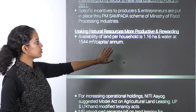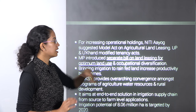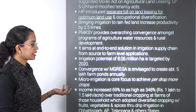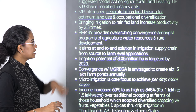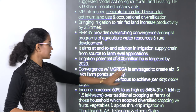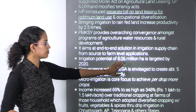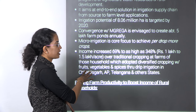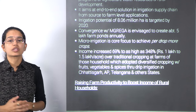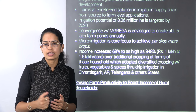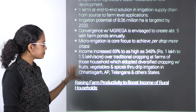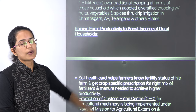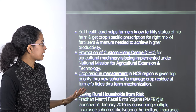We talk about making natural resources more productive — separating a bill on land leasing for optimum use. We are talking about occupational diversification, bringing irrigation even into rain-fed areas, and increasing productivity through good irrigation supply projects. The irrigation potential is targeted at around 8.06 million hectares in 2020. Major states where we are working on drip irrigation are Chhattisgarh, Andhra Pradesh, and Telangana — important specifically in areas with little or scanty rainfall. We are also working towards doubling the farmers' income by 2022.